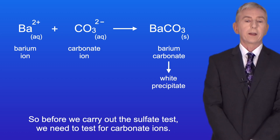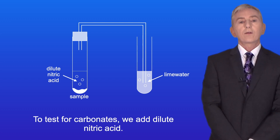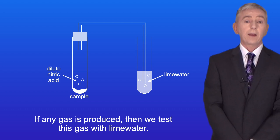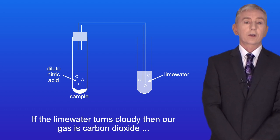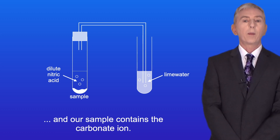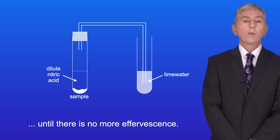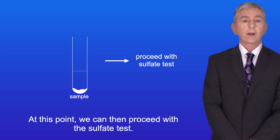Before we carry out the sulfate test, we need to test for carbonate ions, which we looked at in the last video. To test for carbonates, we add dilute nitric acid. If any gas is produced, we test this gas with lime water. If the lime water turns cloudy, then our gas is carbon dioxide and our sample contains the carbonate ion. We can get rid of the carbonate by adding nitric acid to our sample until there's no more effervescence. This tells us that all of the carbonate ions have reacted, and at that point we can proceed with the sulfate test.